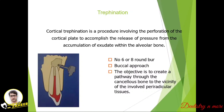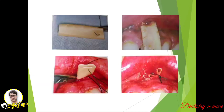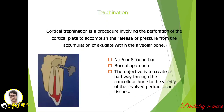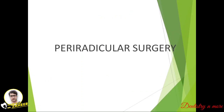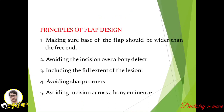Trefination, or cortical trefination, is a procedure involving the perforation of the cortical plate to accomplish the release of pressure. It is like incision and drainage but goes into the cortical bone. The idea is to remove the exudate formed within the alveolar bone. You can use a number 6 or 8 bur, mostly from the buccal side. The objective is to create a pathway through the cancellous bone to the vicinity of the involved peri-radicular tissues.